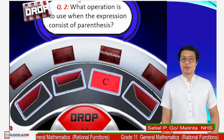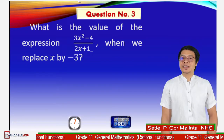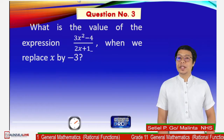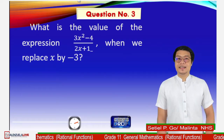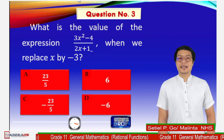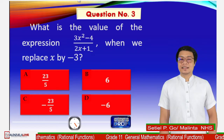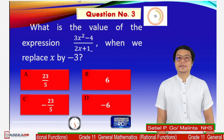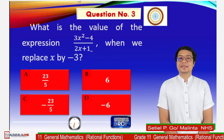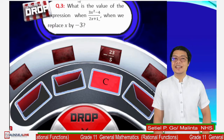Let's proceed to question number 3. What is the value of the expression 2x squared minus 4 all over 2x plus 1, when we replace x by negative 3? These are the choices: A, 23 over 5; B, 6; C, negative 23 over 5; or letter D, negative 6. 5 seconds. Go! Time's up. Drop your answers. The correct answer is letter C, negative 23 over 5.